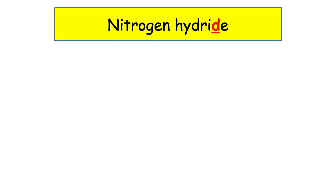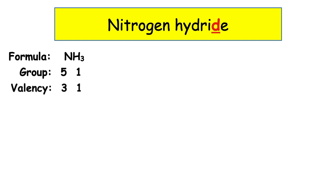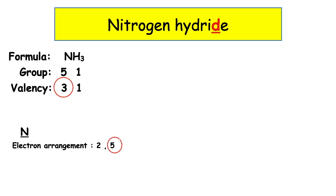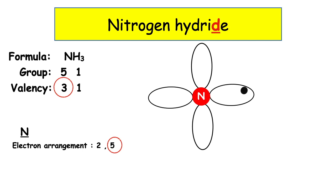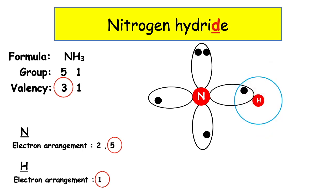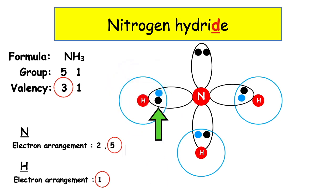Nitrogen hydride has the formula NH₃. Nitrogen is found in group five and hydrogen is found in group one. The valency of nitrogen is three and the valency of hydrogen is one. We circle the one with the highest valency. Nitrogen has the electron arrangement 2, 5. The outermost occupied energy level is the second energy level, so we draw a petal. We pop in the five outer electrons, remembering to make them sit singly before they double up. Hydrogen has the electron arrangement 1, found in the first energy level, so we draw a circle. We overlap the circle with an unpaired electron from nitrogen. We have three hydrogens, so we need three overlaps. Those three shared pairs of electrons represent three covalent bonds.